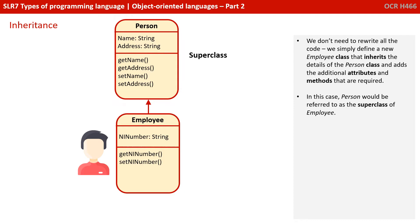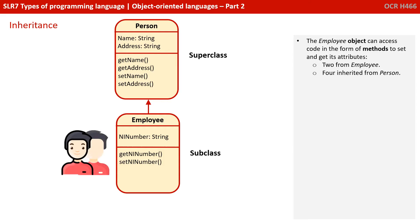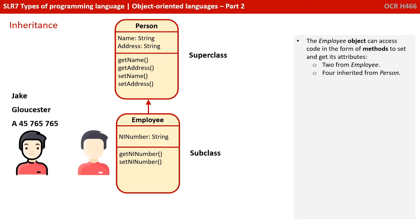In this case, person would be referred to as the super class of employee. On the other hand, employee would be referred to as the derived class or subclass of person. The employee object can access code in the form of methods to set and get its attributes — two from the employee class and four inherited from the person.